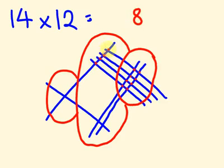1, 2, 3, 4, 5, 6, 6 there, and 1 there. So the answer is 168. Pretty cool, right?